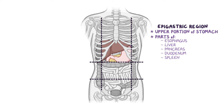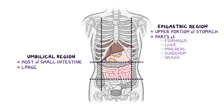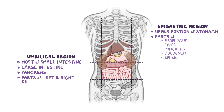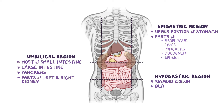Below the epigastric region is the umbilical region, which contains most of the small intestine and part of the large intestine and the pancreas, as well as parts of the left and right kidneys. Directly below the umbilical region is the hypogastric region. Here you can find the sigmoid colon, bladder, rectum, and reproductive organs such as the uterus, ovaries, and prostate.